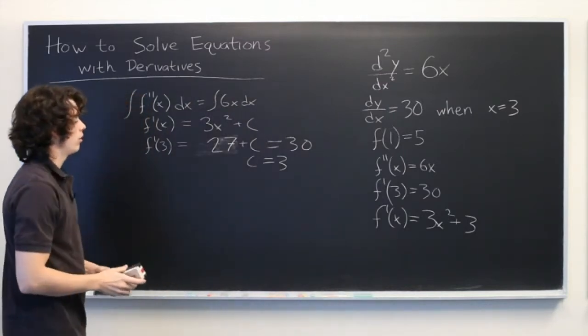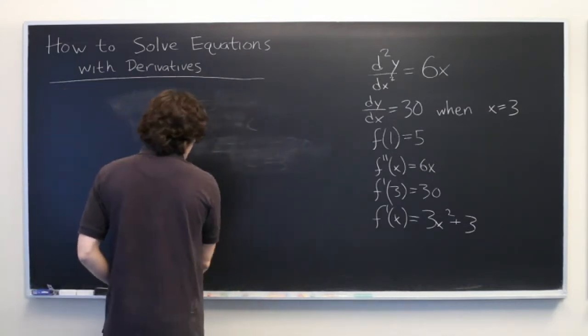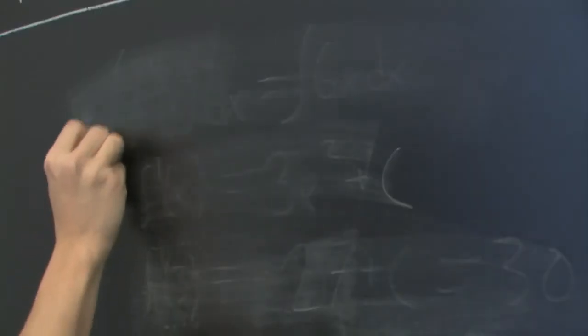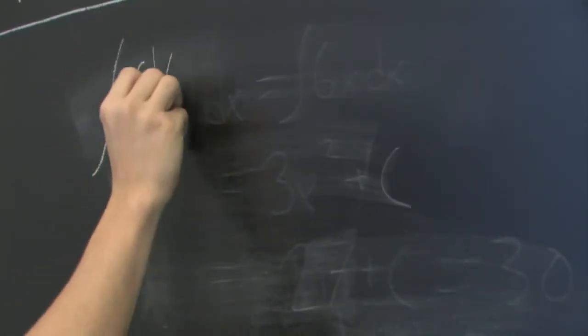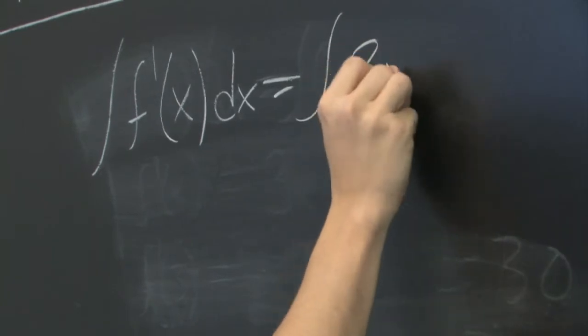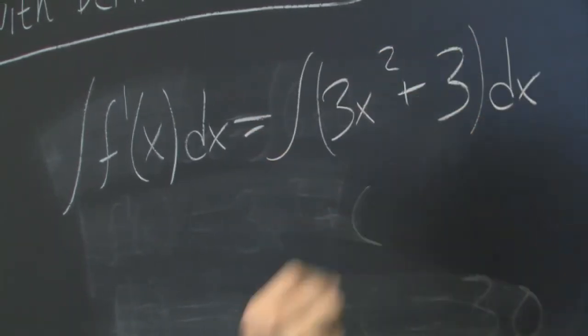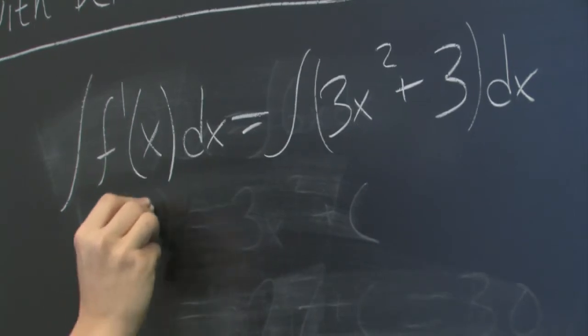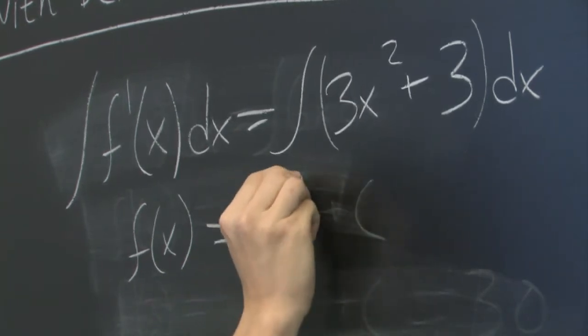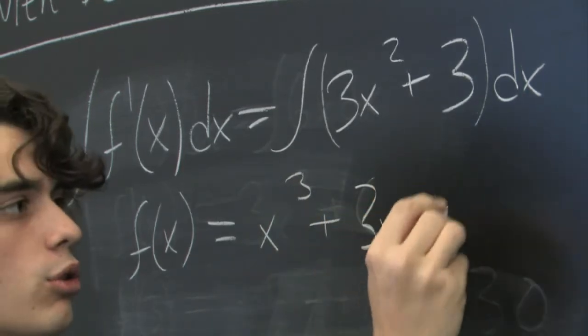Next, we want to determine an equation for f of x. And we'll do the same process. We'll integrate both sides of this equation. The integral of f prime of x dx is equal to the integral of 3x squared plus 3 dx. Here, we get f of x. Here, we get x cubed plus 3x plus some unknown constant. We'll call it k this time, just to avoid confusion.